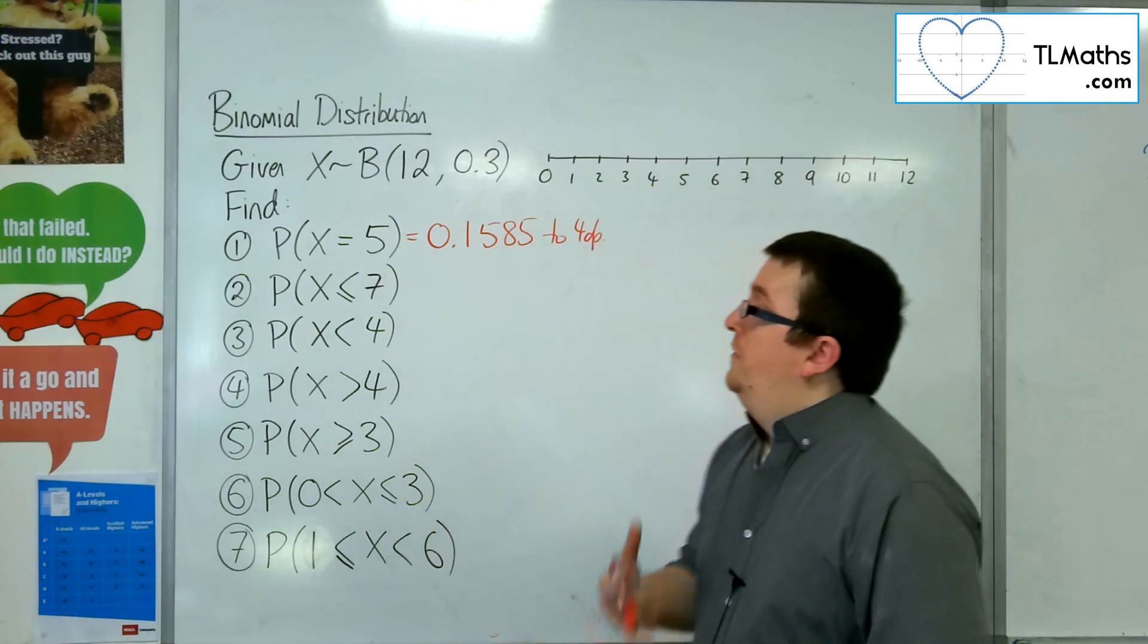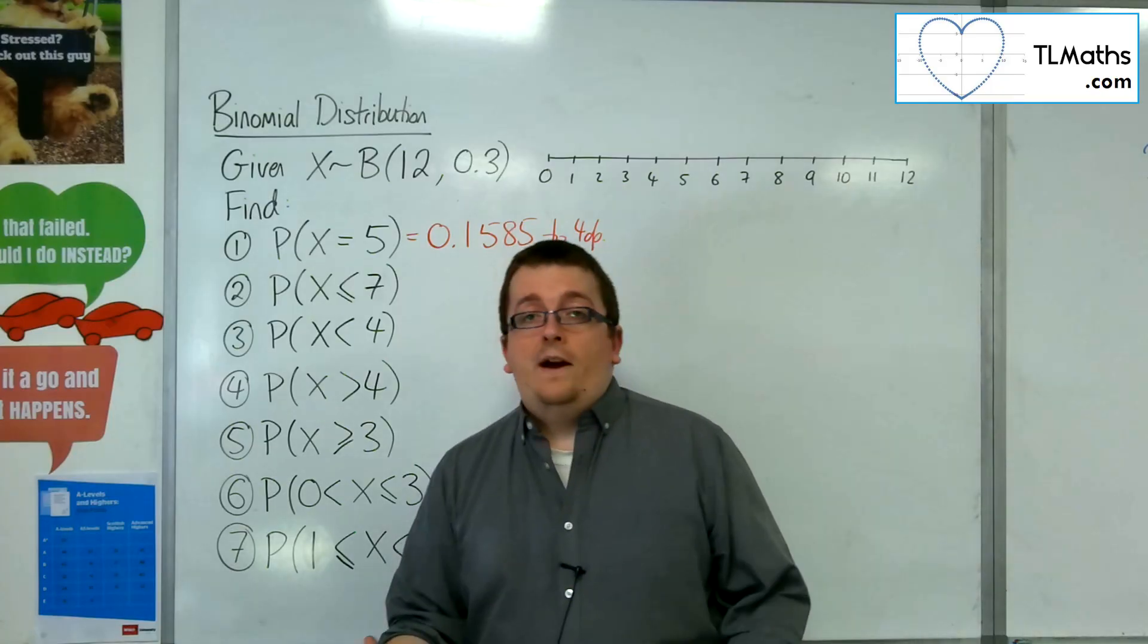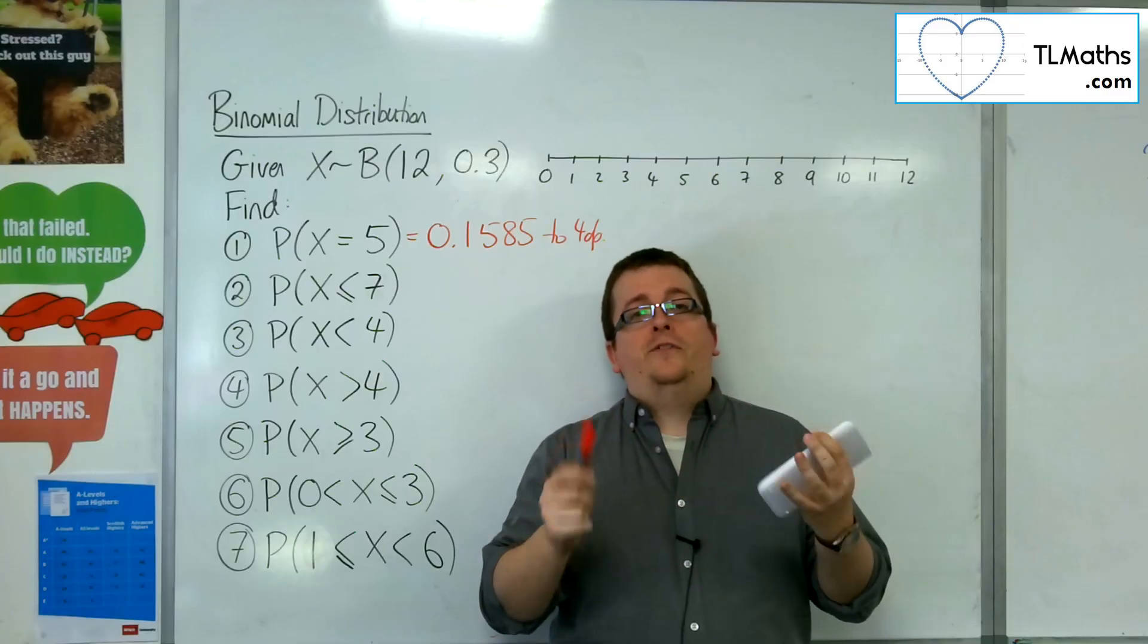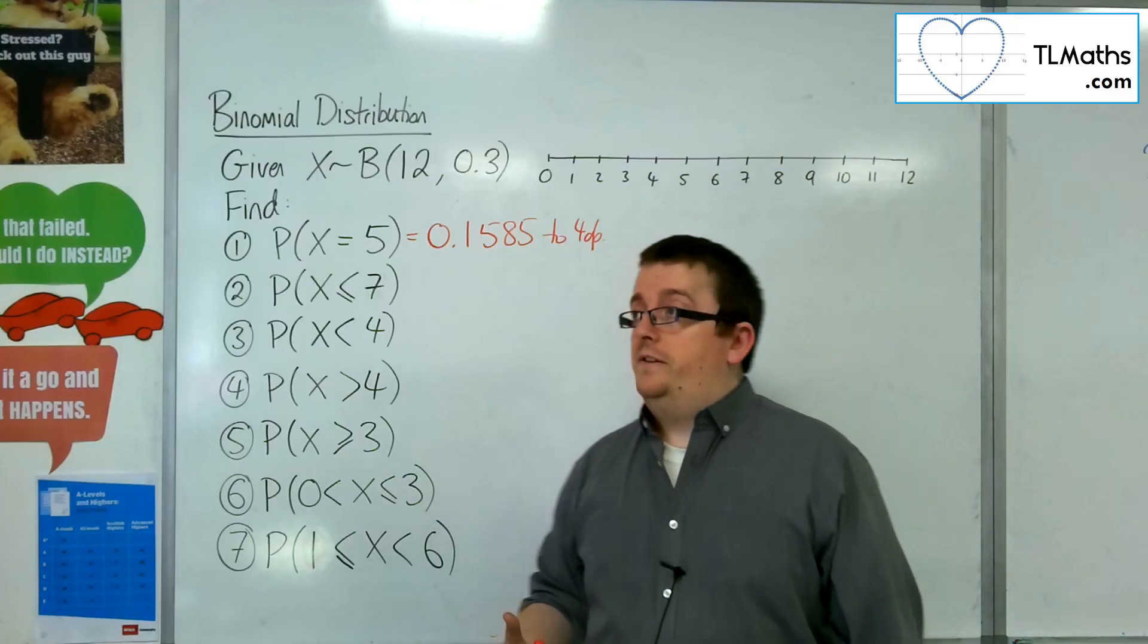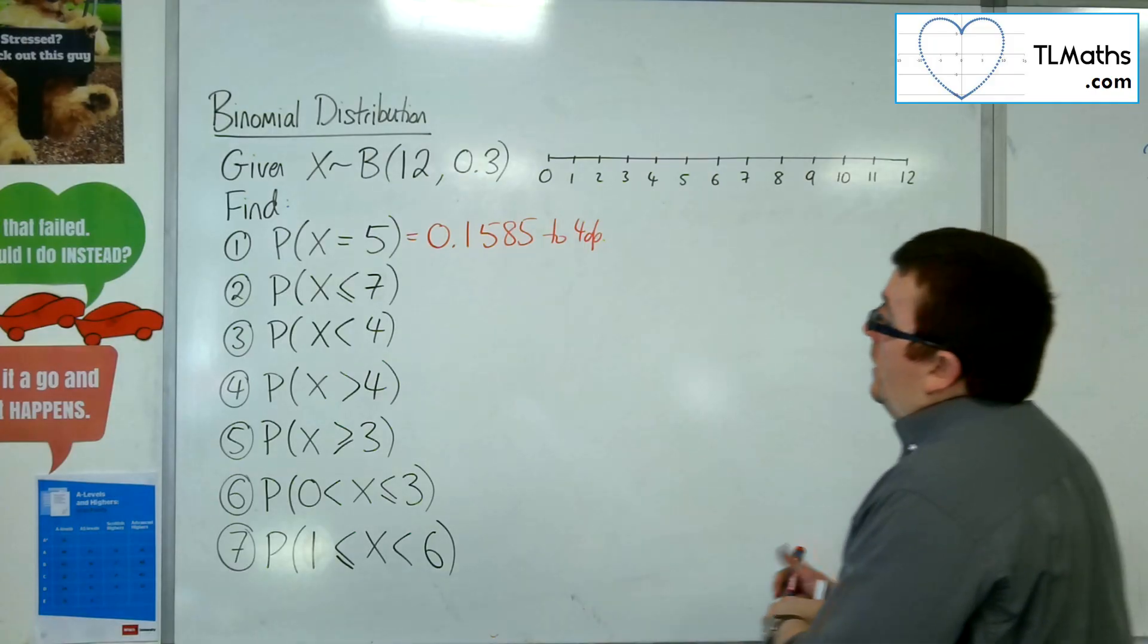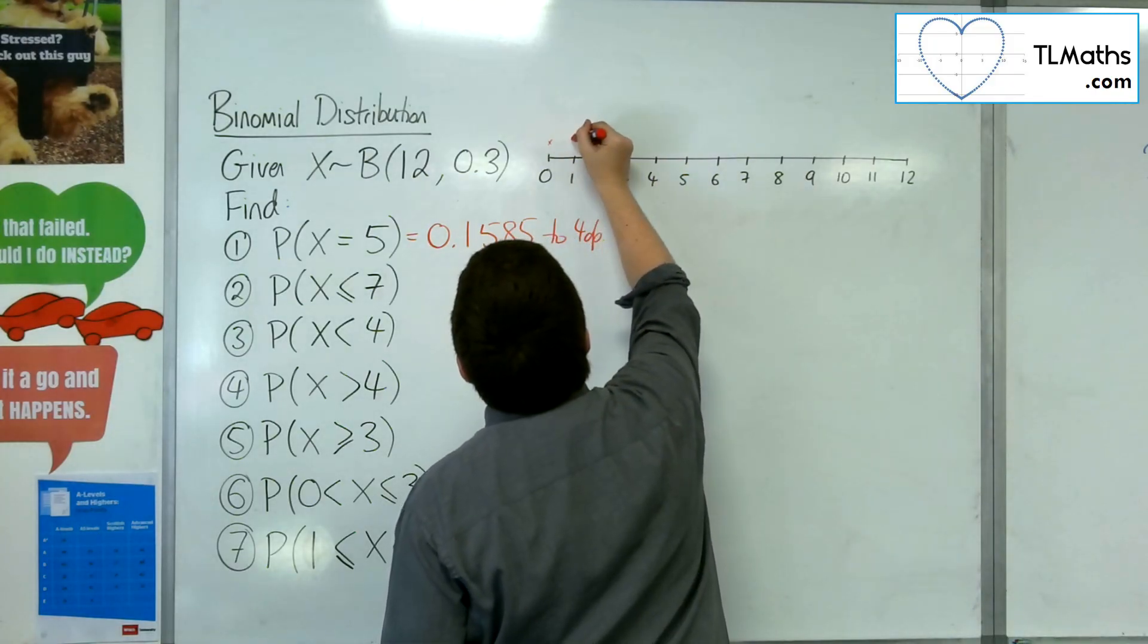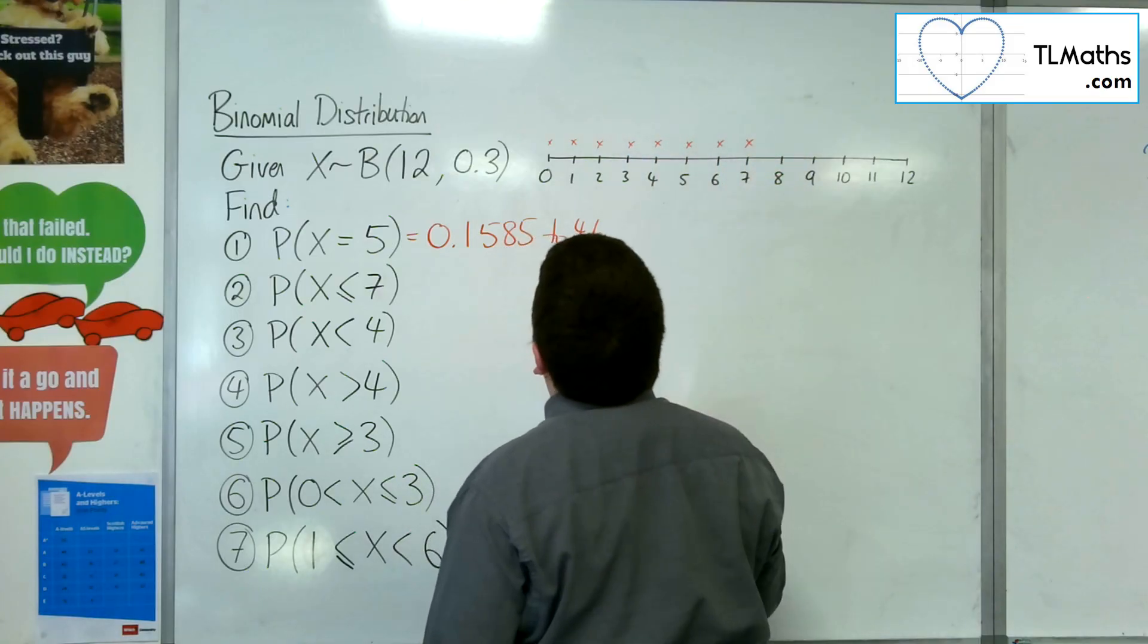Now, number 2, the probability of x being less than or equal to 7. Now, we could work out probabilities of x being 0, 1, 2, 3, 4, 5, 6, 7 and add them all together. We don't want to have to do that, it's too long winded. So here we are looking at less than or equal to 7. So 0, 1, 2, 3, 4, 5, 6 and 7.